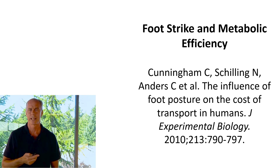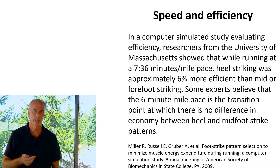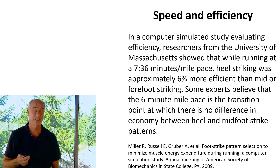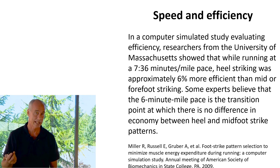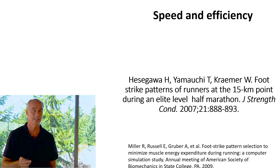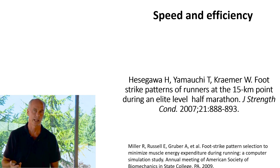As for when you lose that efficiency advantage, Miller showed that at a 6:36 per mile pace heel striking was still 6% more efficient. Most experts say once you hit the six-minute mile pace there's no difference. Looking at elite Japanese runners running sub-six-minute miles, there's no difference in efficiency and people choose a pattern based on their own architectural alignment.